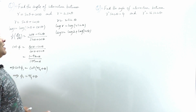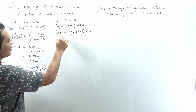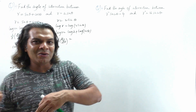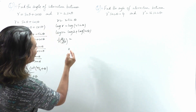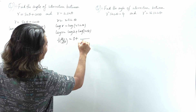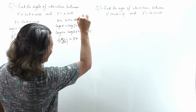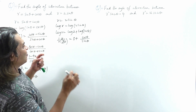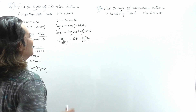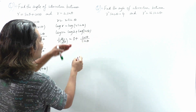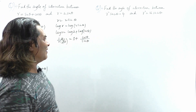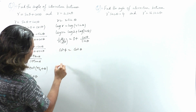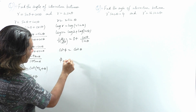Now we differentiate. We get 1/r · dr/dθ. The derivative of log 2, a constant, is 0. Plus the derivative of log(sinθ): that is 1/sinθ, and the derivative of sinθ is cosθ by chain rule. So 1/r · dr/dθ = cosθ/sinθ = cotθ. Therefore cot φ = cotθ, and we conclude that φ₂ = θ.